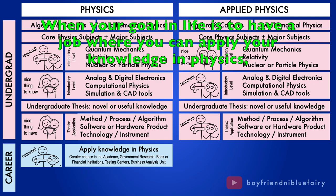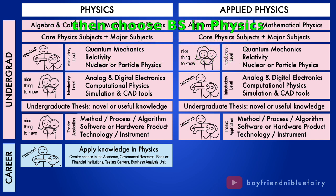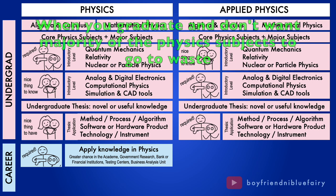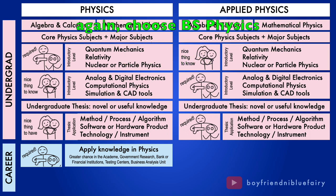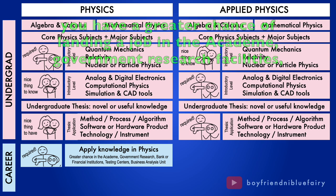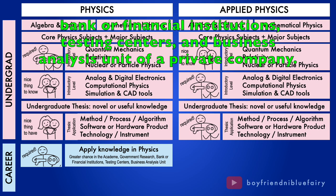When your goal in life is to have a job where you can apply your knowledge in physics, then choose Bachelor of Science in physics because people will hire you literally to use physics to solve or accomplish something. When you graduate and don't want majority of the physics subjects to go to waste, again choose Bachelor of Science in physics. When this aspect of work is expected of you, you have greater chance of landing a job in the academe, government research facilities, bank or financial institutions, testing centers, and business analysis unit of a private company.